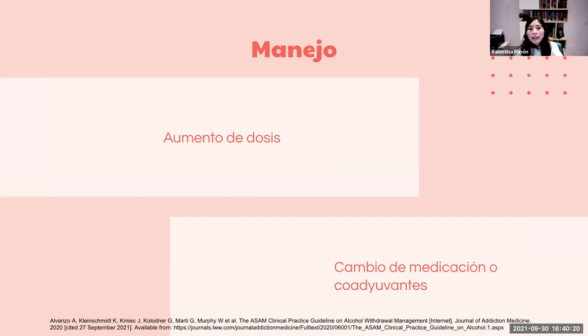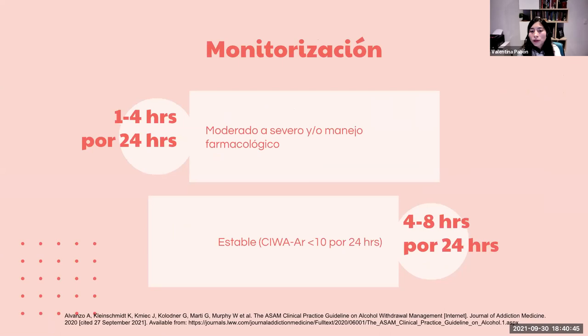Si el paciente no responde a las benzodiazepinas, se aumenta la dosis hasta la máxima y si los síntomas persisten, se puede cambiar de medicación o adicionar otro fármaco. La monitorización para síndrome moderado a severo con manejo farmacológico es cada 1 a 4 horas por 24 horas. Si el paciente está estable con CIWA-Ar menor a 10 por 24 horas, se monitoriza cada 4 a 8 horas por 24 horas más. Con 36 horas de CIWA-Ar menor a 10 se puede considerar el alta.